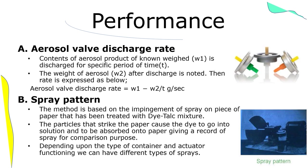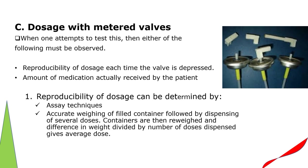Depending on the type of container and actuator, different spray patterns can be obtained. Dosage with metered valves: reproducibility of dosage each time the valve is depressed and the amount of medication actually received by the patient must be observed. Reproducibility can be determined by assay techniques — accurate weighing of a filled container followed by dispensing of several doses; containers are then re-weighed and the difference in weight divided by the number of doses dispensed gives average dose.